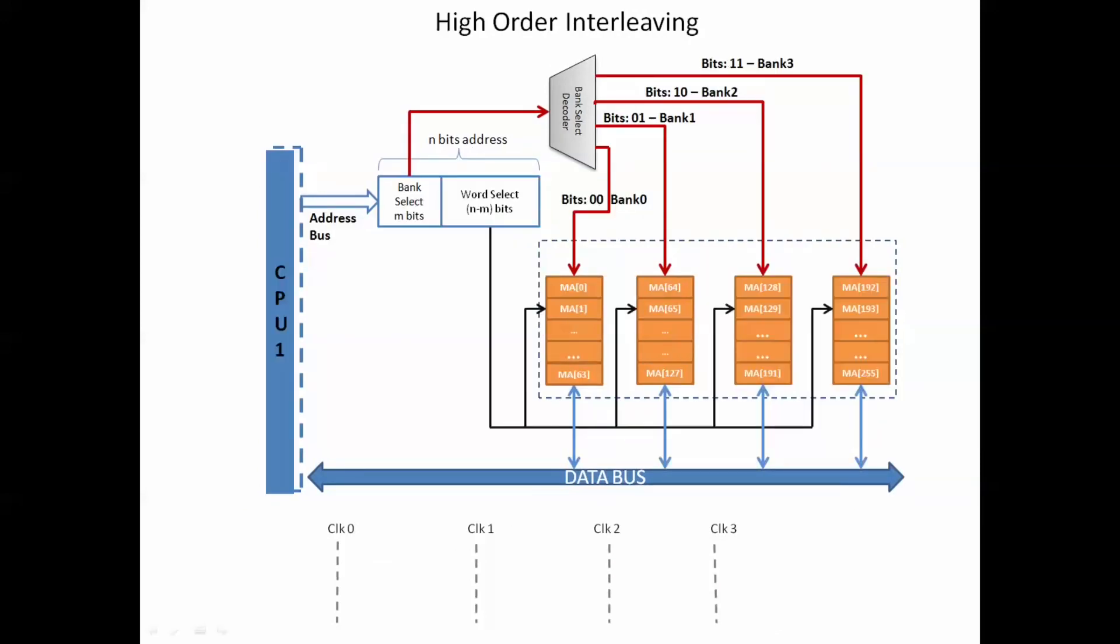For high-order interleaving, let's consider the same four-banked memory with the only difference that blocks of successive memory addresses are interleaved across the banks. So when the CPU sends an address, the most significant two bits will select the bank as shown. The MSB of the address, that is 0, 0, will select bank 0, and the remaining lower-order bits will select the word from the selected bank 0 in our example.